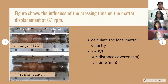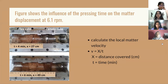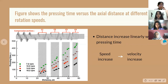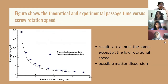This shows the influence of pressing time on the material displacement at 6.1 rpm. The press cake of flax seed and canola seed was used to calculate the local material velocity using the equation z = x / t, where x refers to the distance covered and t refers to the time. The chart shows that the distance covered by material during compression increased linearly with pressing time; thus, as speed increases, velocity increases. The experimental passage time was compared to the theoretical passage time, and the results were almost the same, except at low rotational speed due to possible material dispersion.